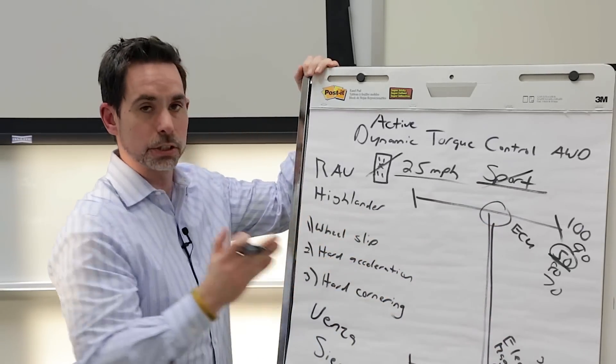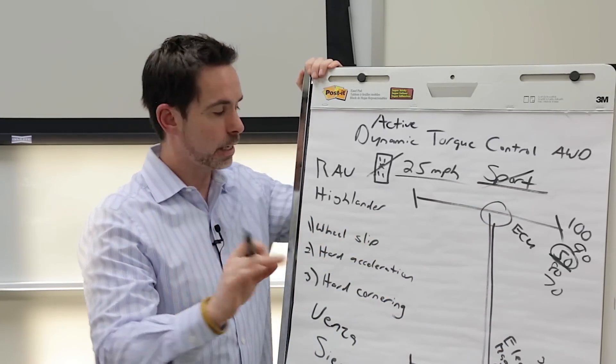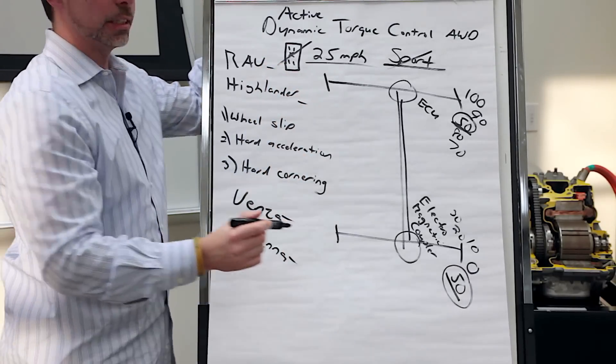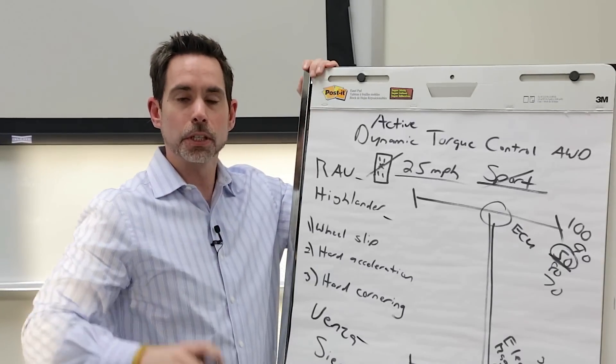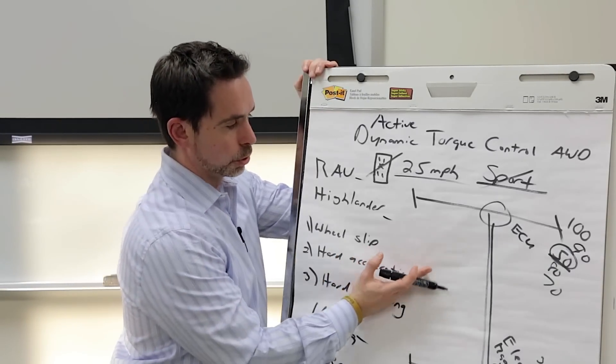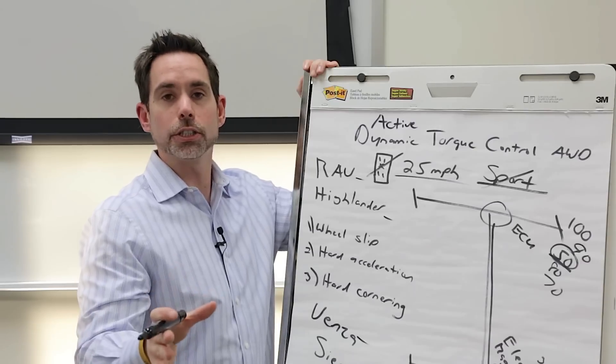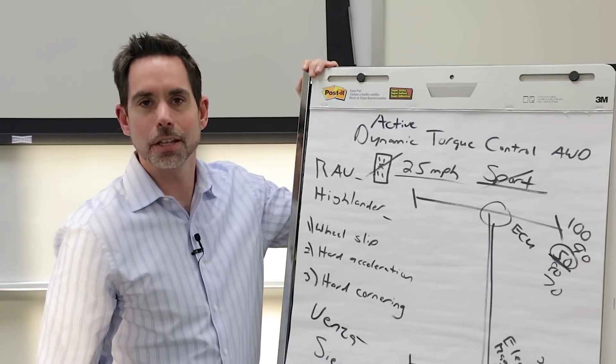So, now you can discuss all-wheel drive systems and exactly how they work in the RAV, Highlander, Venza, and Sienna. Please take the time, slow yourselves down, do this illustration for your customers. It's going to work wonders. Any questions, please feel free to contact us. Thanks.